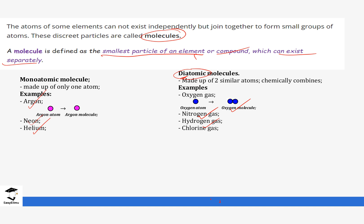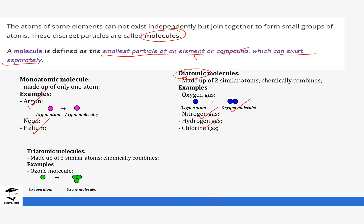We also have molecules that are made up of three similar atoms — we call them triatomic. A common example is ozone, which is made up of three oxygen atoms. So it is still a molecule but made up of three similar atoms.